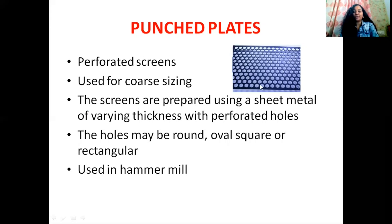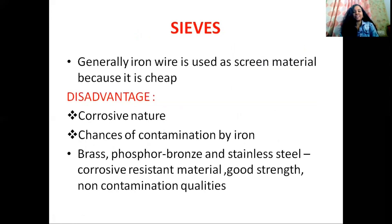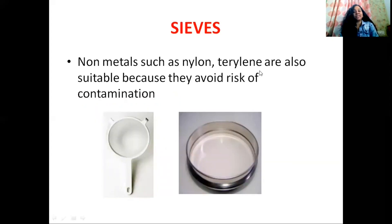These types of sieves are used in hammer mills. Generally, iron wire is used as screening material because it is cheap and readily available. However, iron has a corrosive nature and chances of contamination by iron are very high. Brass, phosphorus bronze, and stainless steel are other materials that can be used as screening material; these have corrosion-resistant properties, good strength, and non-contamination qualities. Non-metals such as nylon and tourmaline can also be used to make sieves because these materials avoid the risk of contamination.